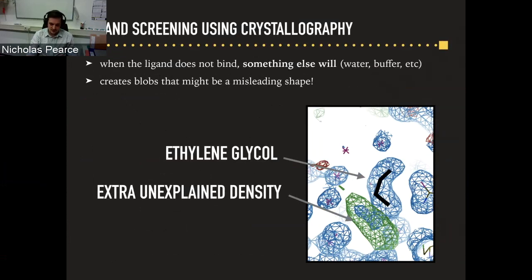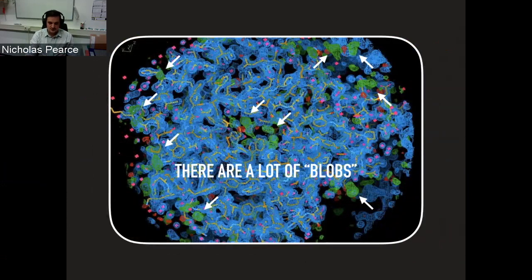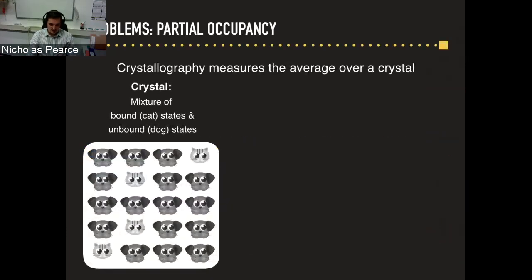If your ligand adopted a particular shape, you could possibly misinterpret that density as your ligand. This is a particular problem because there are a lot of blobs in crystallographic data sets all over the surface of our protein. So what we want to know is: which blobs are my ligand, and how do I model my ligand? This is made even worse by the fact that our crystals are heterogeneous — they contain multiple protein states. Taking a facile example: we have the unbound state of our protein, which is a dog, and the bound state, which is a cat.